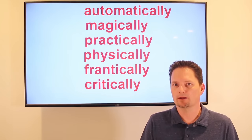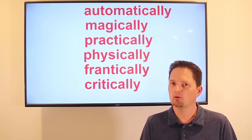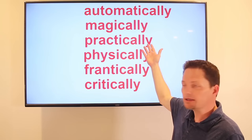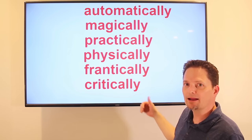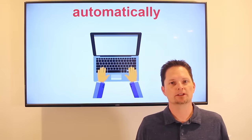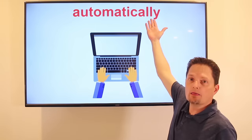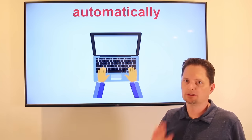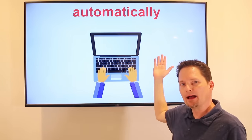Hello, welcome to English for Everyone. Today we're looking at the American pronunciation of some difficult words. Let's take a closer look. Our first example: automatically. The adjective is 'automatic.' We don't have the word 'automatical' — it's just 'automatic' for the adjective and 'automatically' for the adverb.